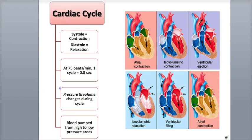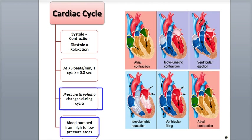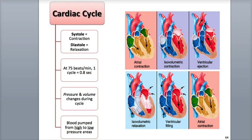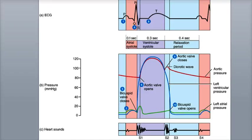This leads to blood pressure and volume changes during the cardiac cycle. Blood is pumped from high pressure areas during contraction to low pressure areas. The cardiac cycle is a mechanical event, similar to squeezing a plastic water bottle full of water. As you squeeze the bottle, the pressure of water inside the bottle increases, just like the pressure of blood in the heart chambers increases during contraction.